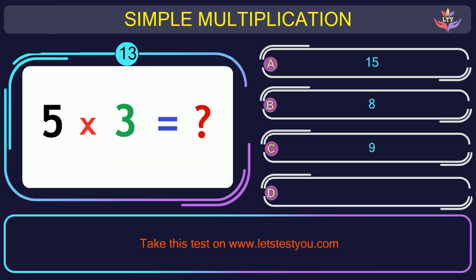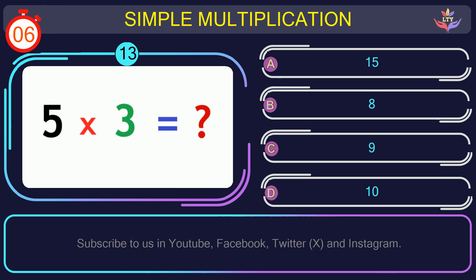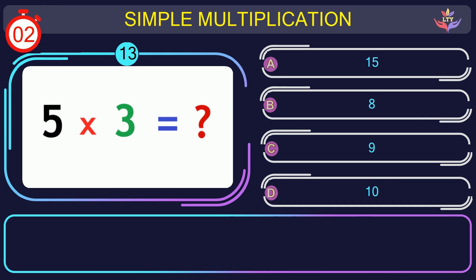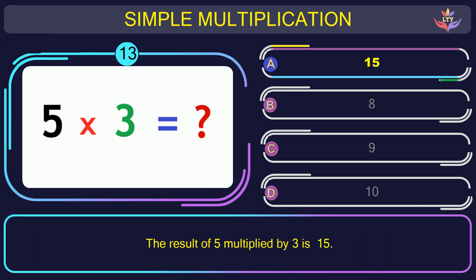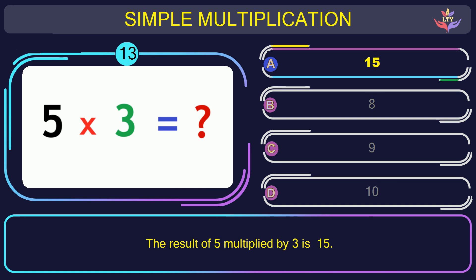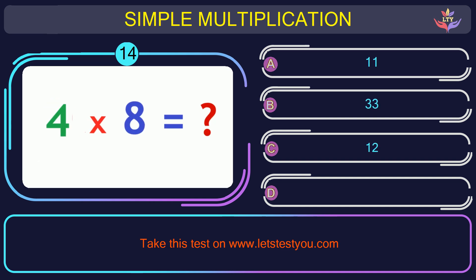Question number 13: if you multiply 5 by 3, what is the result? The correct answer is option A: 15. The result of 5 multiplied by 3 is 15.